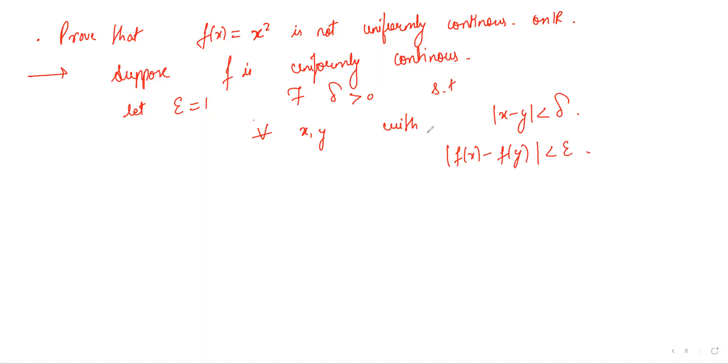Now let's choose some integer n which is greater than 1 over delta. So let's choose y equal to n and let's take x equal to n plus delta over 2.